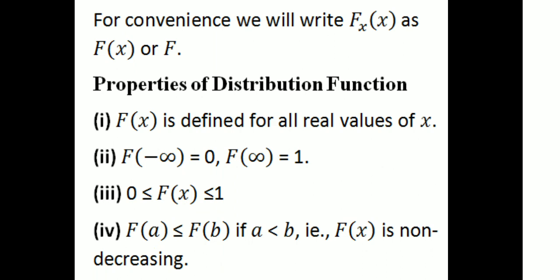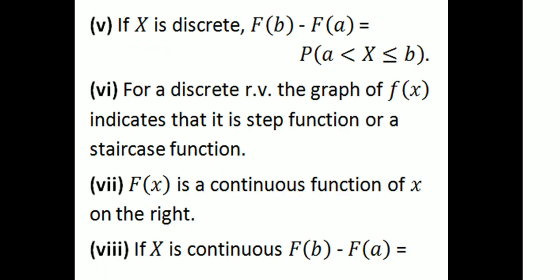Third property: 0 ≤ F(x) ≤ 1, that is, the distribution function contains values between 0 and 1. Fourth property: F(a) ≤ F(b) if a ≤ b, meaning F(x) is non-decreasing. Fifth, for a discrete random variable, F(b) − F(a) = P(a < X ≤ b), and the graph of F(x) is a step function or staircase function.